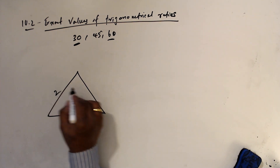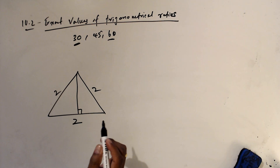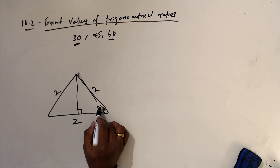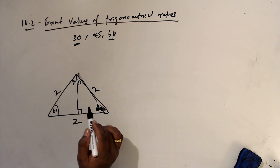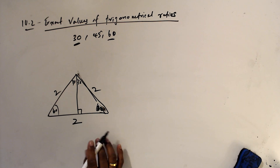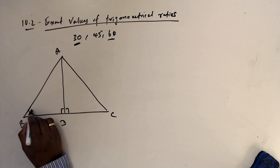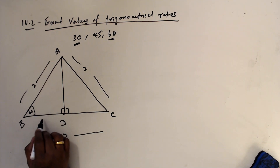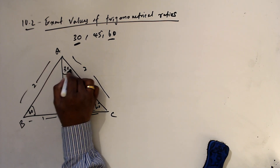For this, we need an equilateral triangle where the length of each side is 2 units. We divide it into two 90-degree triangles. We know that each angle of an equilateral triangle is 60°, so the divided angles become 30° and 30°. The points are labeled A, B, C, D, with right angles at D. All sides are length 2, and the base is split into 1 and 1.